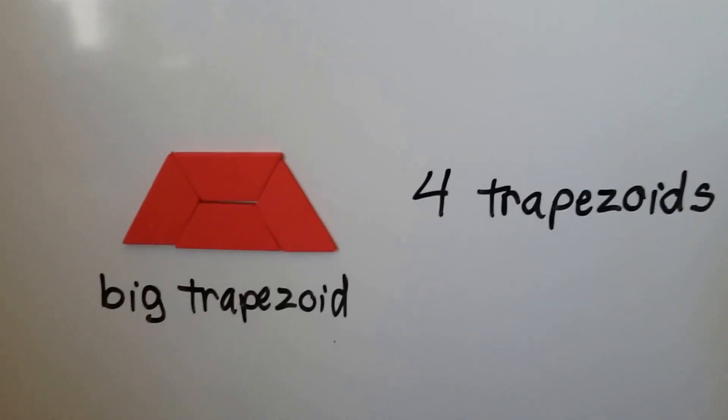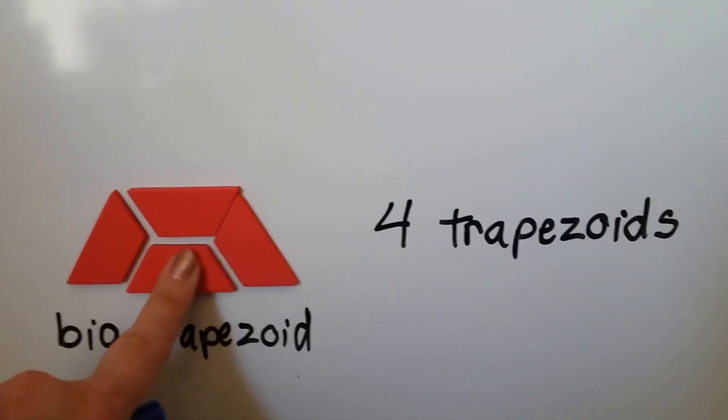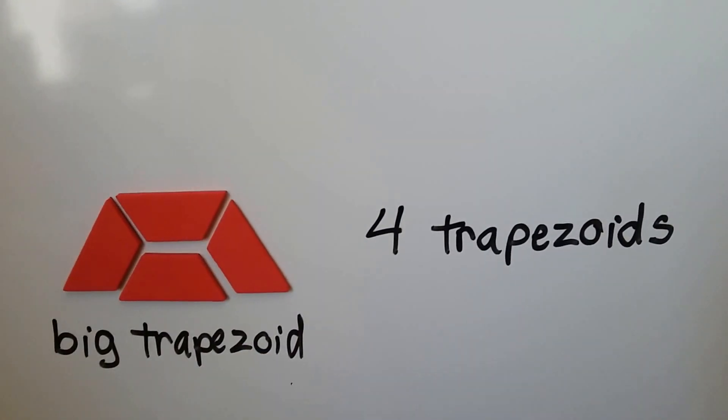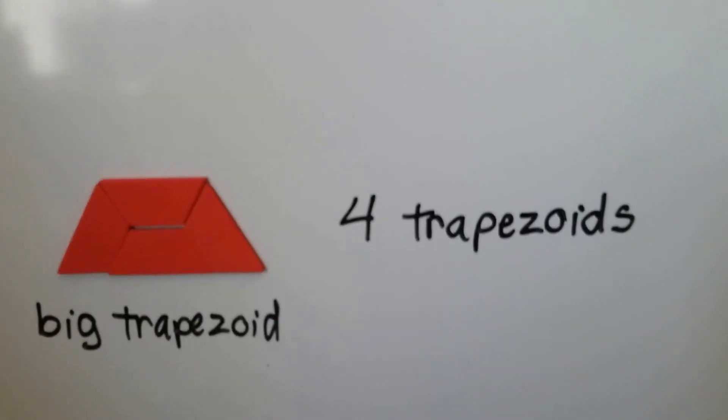Here I used four trapezoids to make one big trapezoid. You can see the four separate trapezoids and when squished together it makes one big trapezoid.